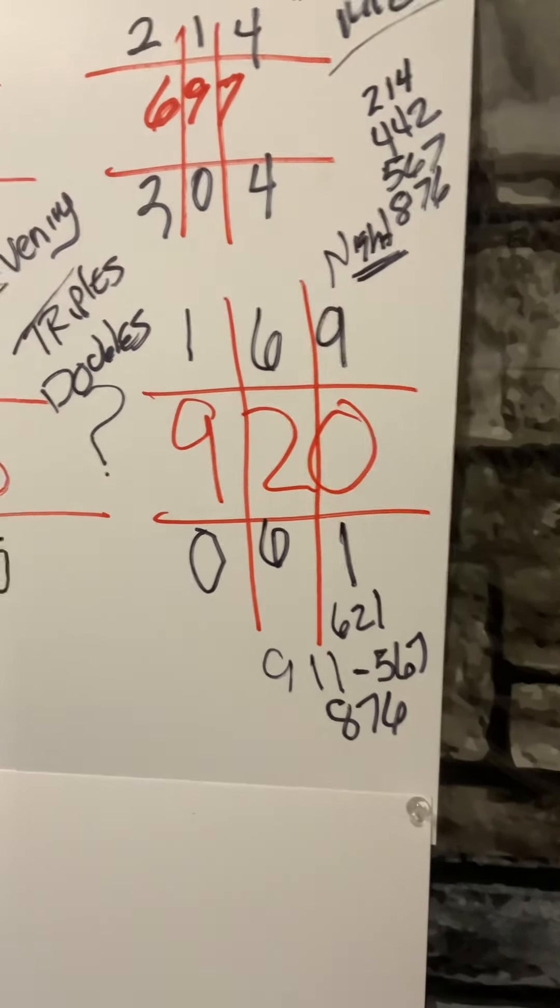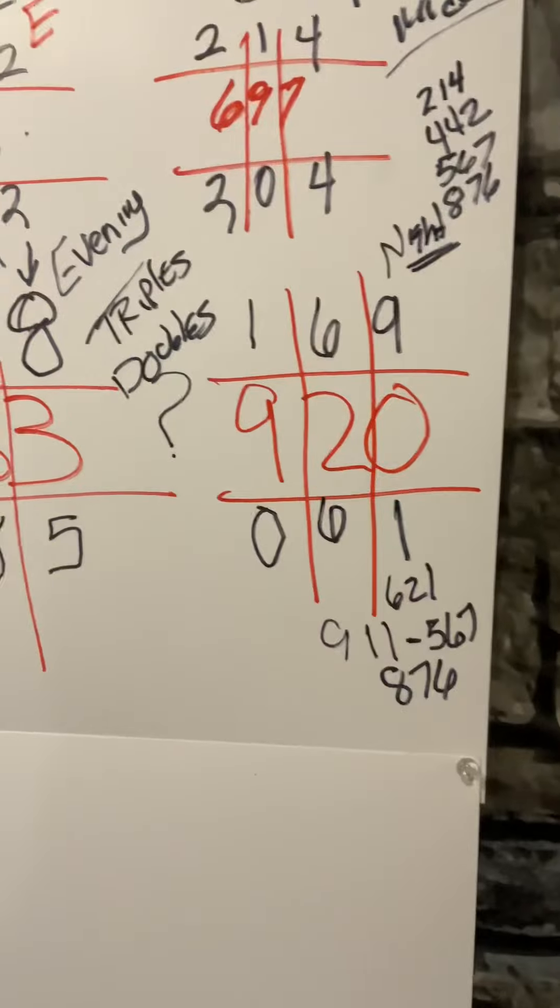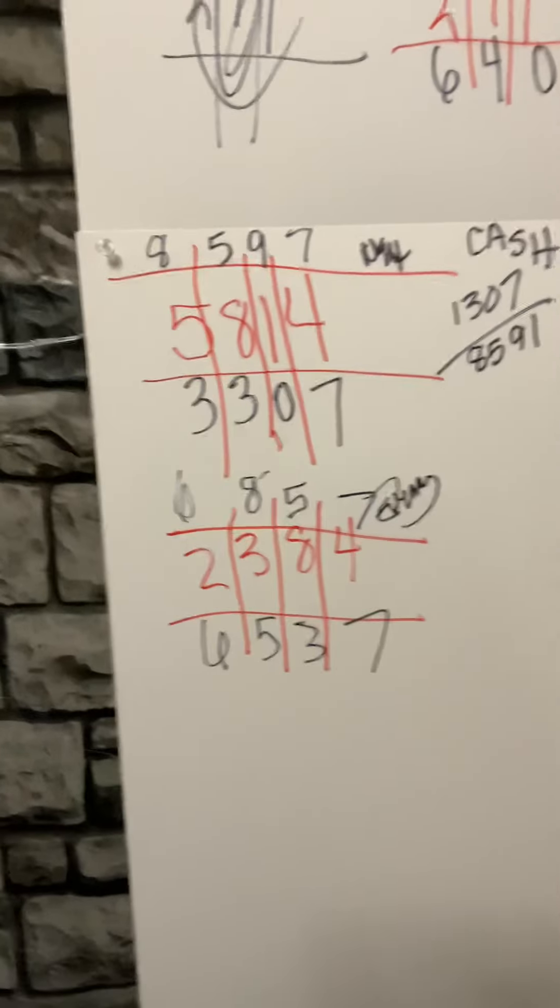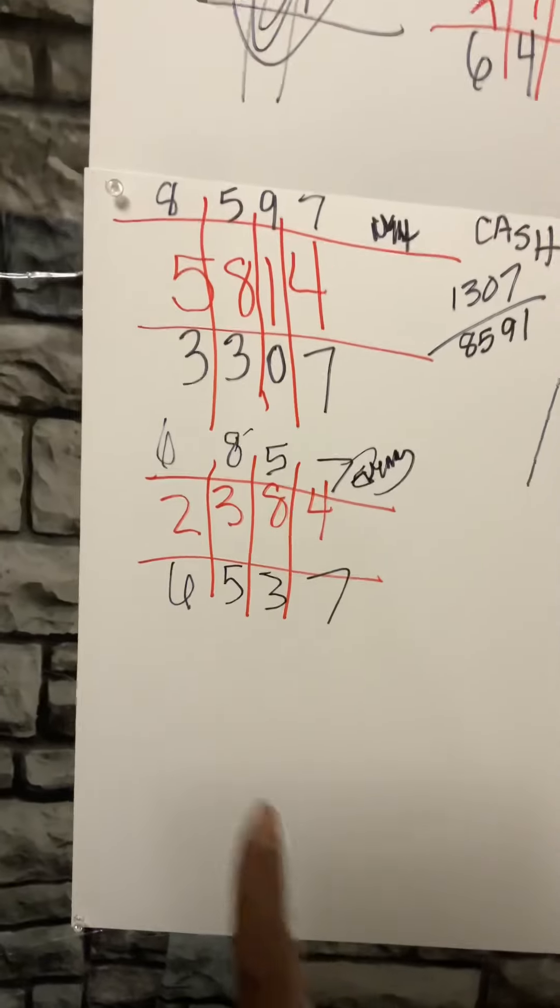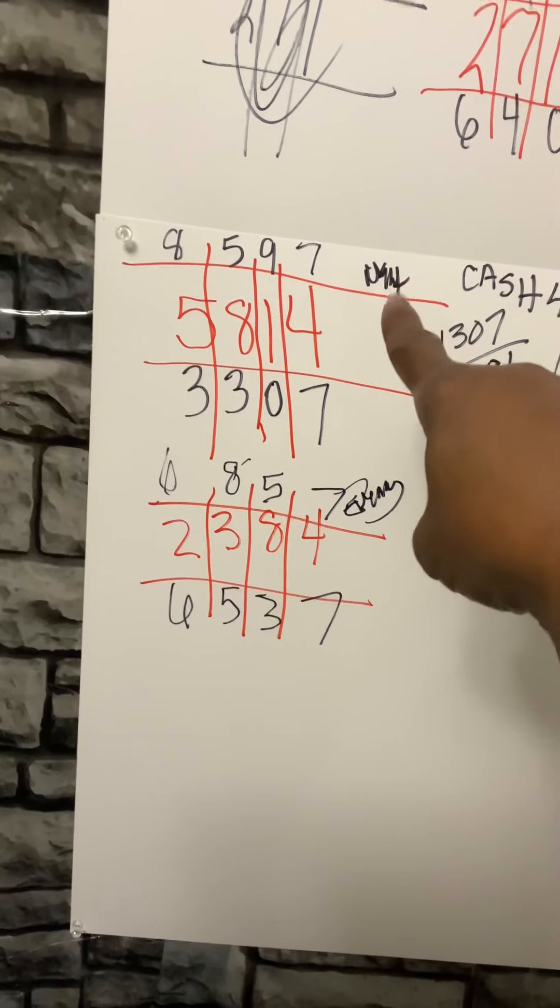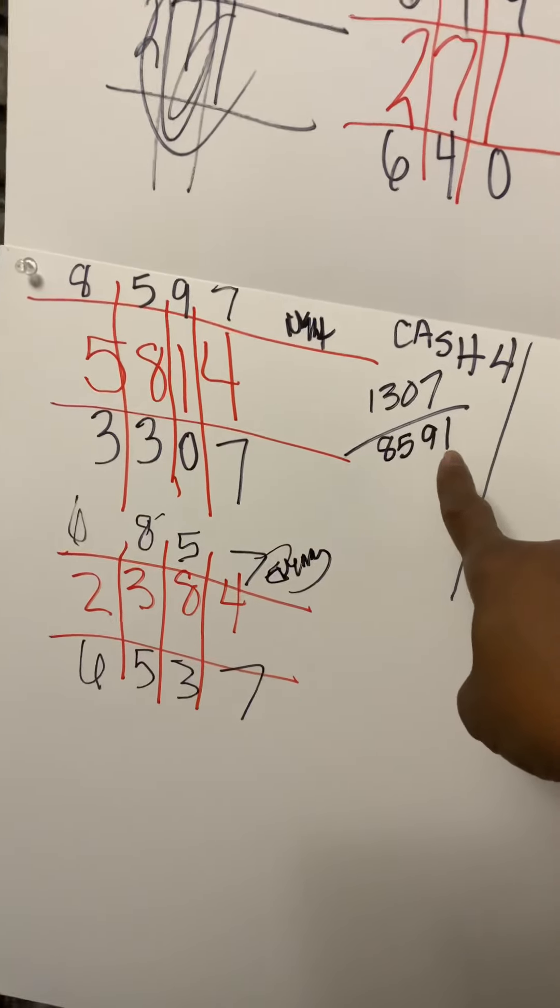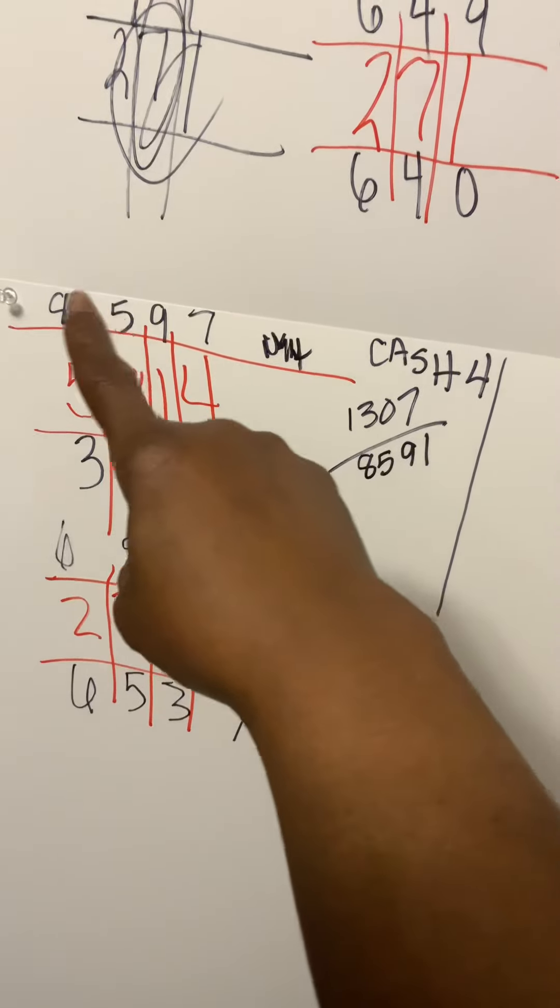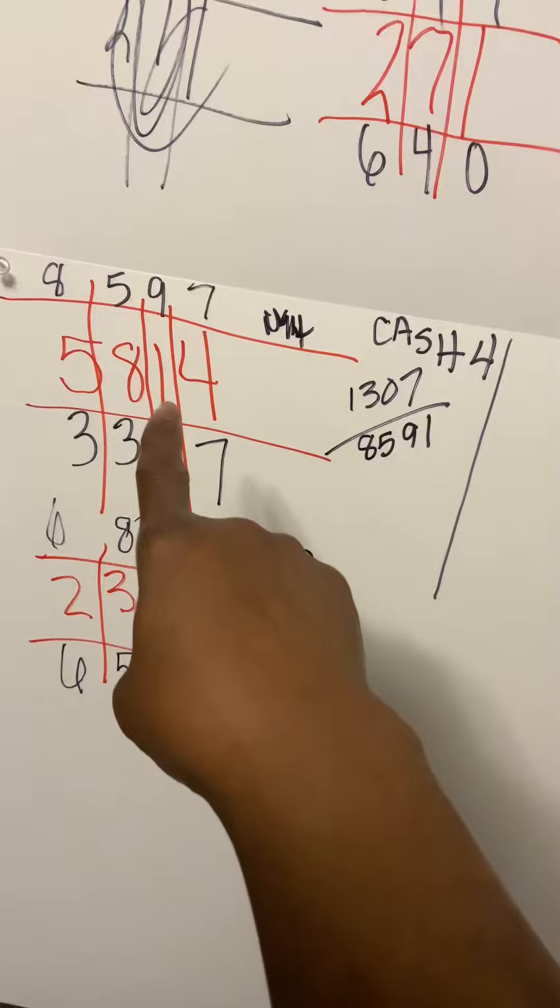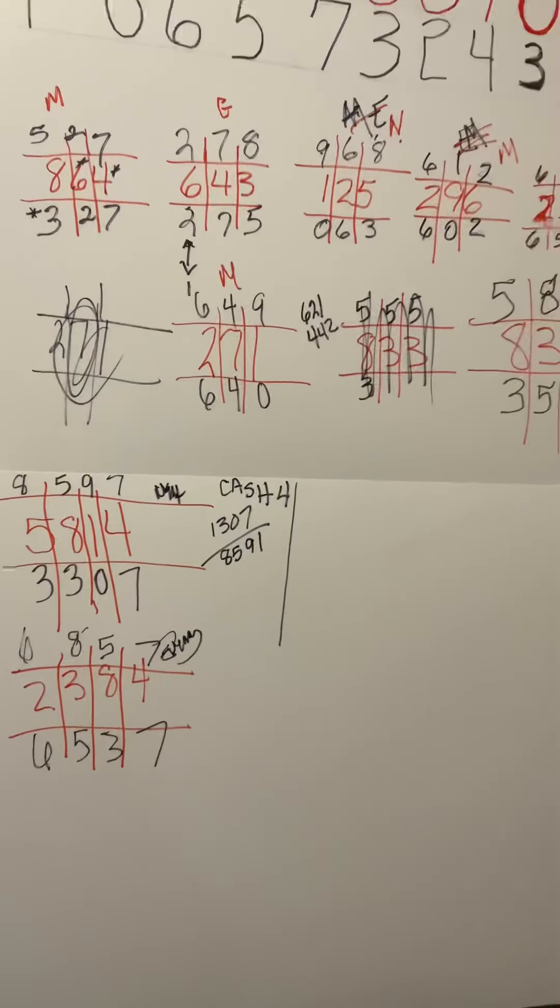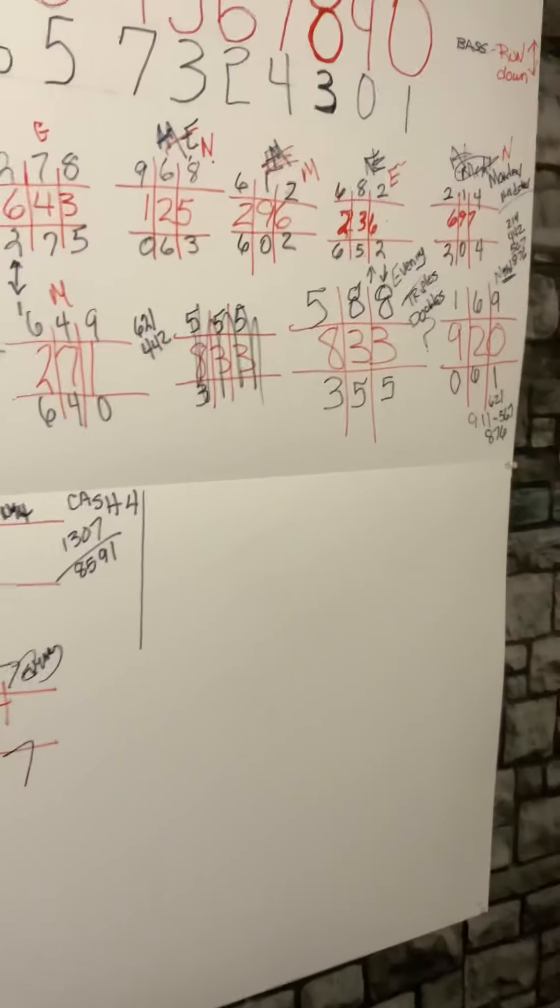I play 567 and 876 every day. I wanted to come over here for the person to ask me for the Cash Four. For the evening, this the night, midday tomorrow, I see 1307 and 8591. Let me know what you see, just let me know.